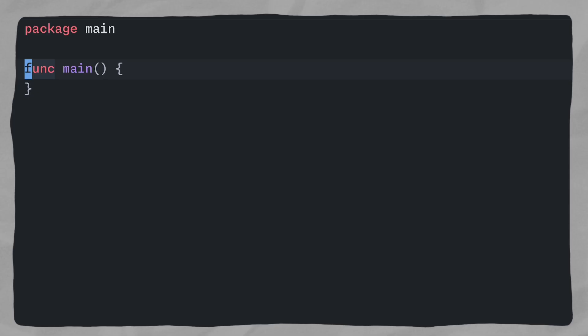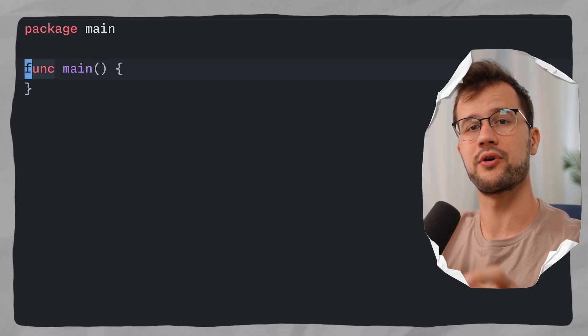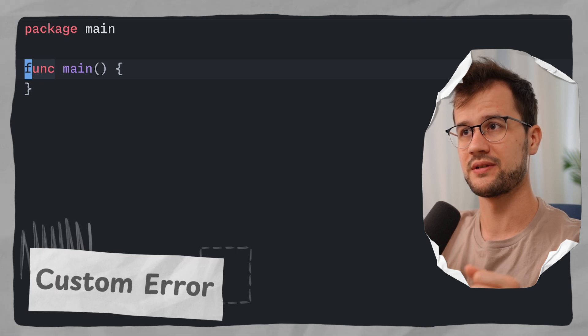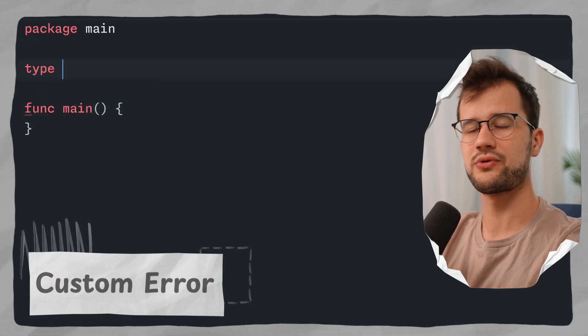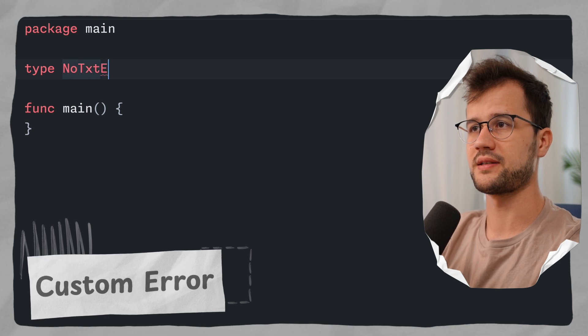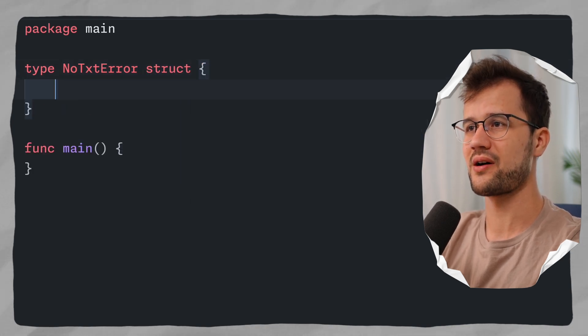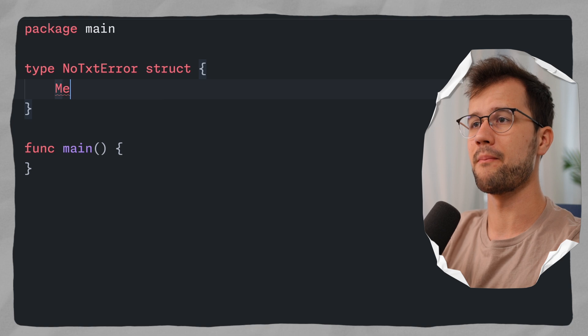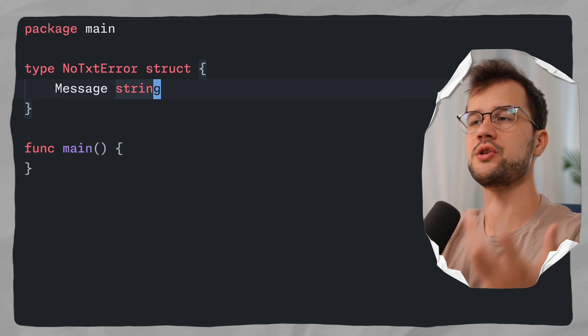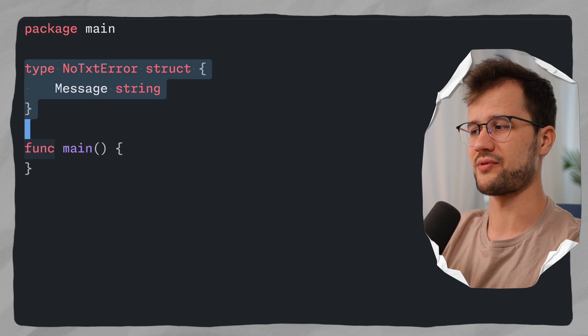Let's start from the beginning. How is an error actually defined in Golang? Every single error in Golang is defined through the error interface, and we can make use of this interface to create our own custom errors. With that in mind, let's create a new struct and call it noTextError. We'll give it a field named message of type string, which is just the error message.